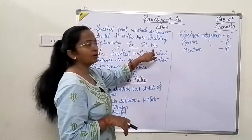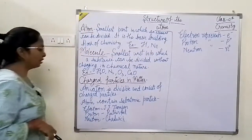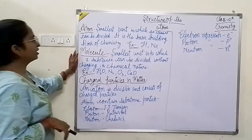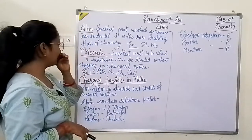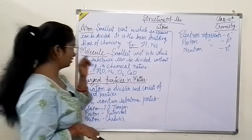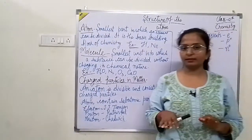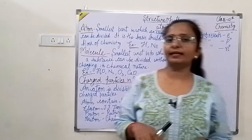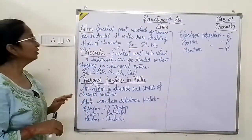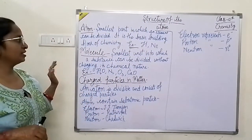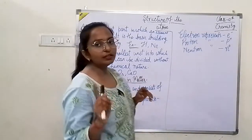For example, Hydrogen and Neon. A Molecule is the smallest unit in which a substance can be divided without changing its chemical nature. This is the smallest unit, but not smaller than the Atom. This is the smallest unit in which our substances are divided, and it is the most important unit in terms of chemical nature.